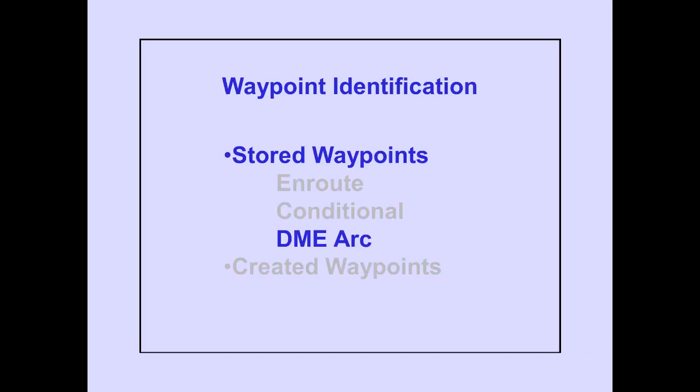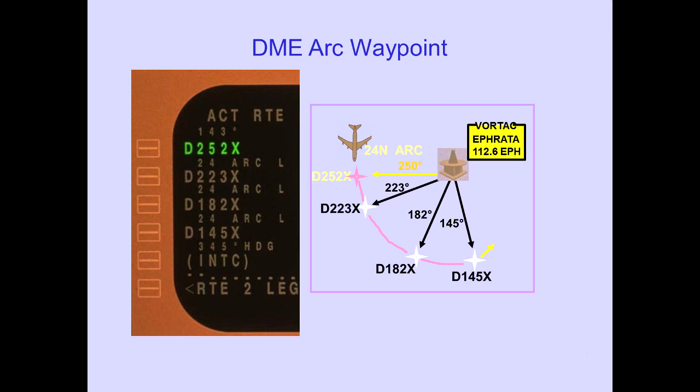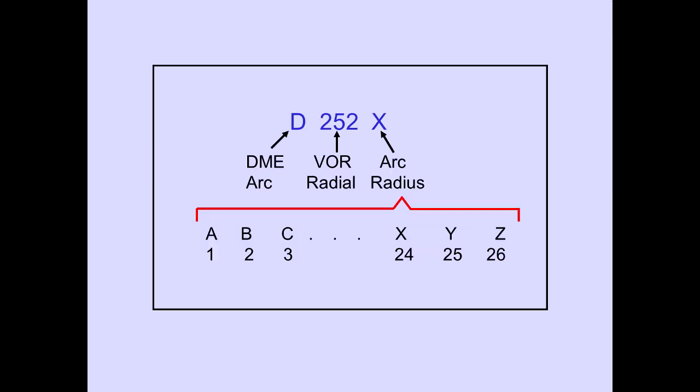Let's look at DME arc waypoints. Waypoints associated with published DME arc procedures are normally identified in the NAV database by a D, followed by the radial, and then a letter. A D indicates a DME arc; 252 is the VOR radial; X is the distance of the DME arc radius. In this example, the letter X equals 24, which is the distance of the arc from the VORTAC.